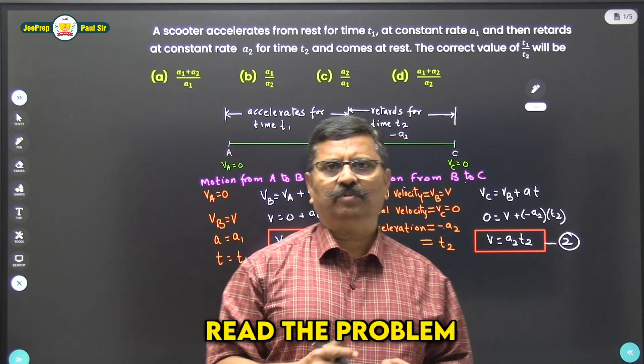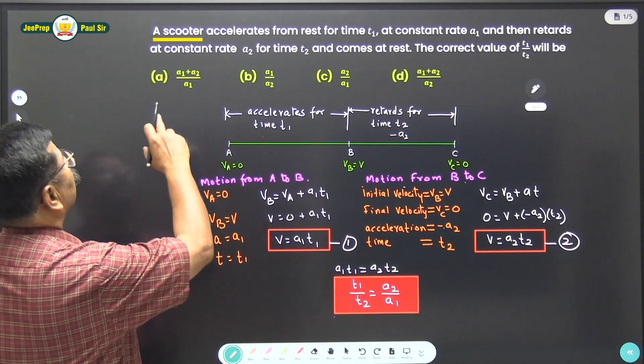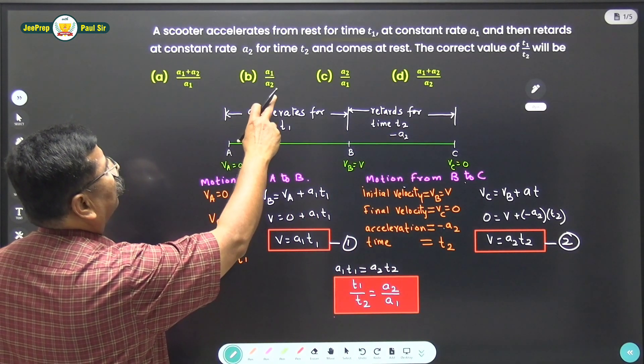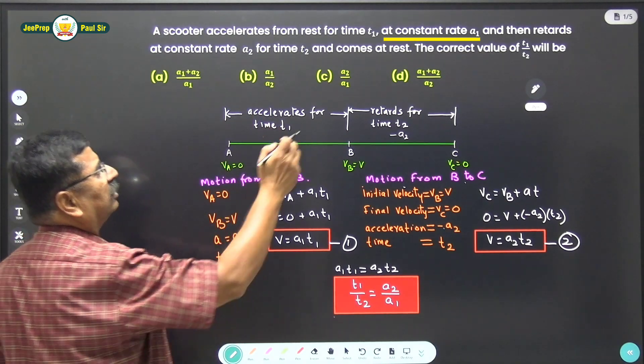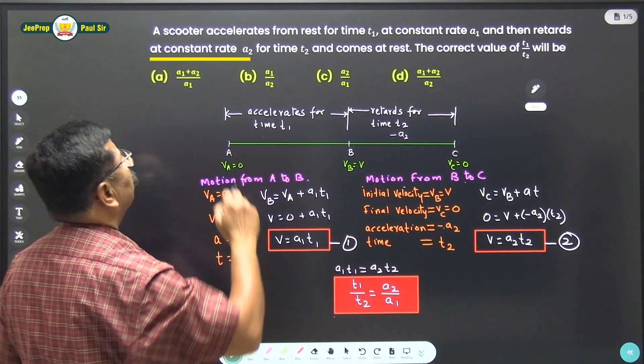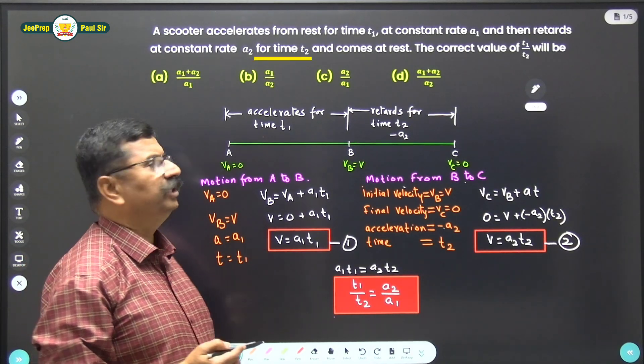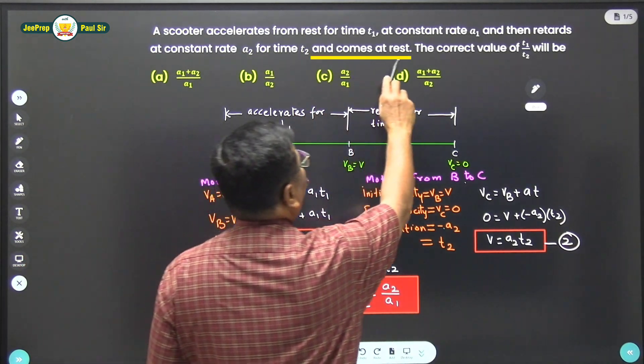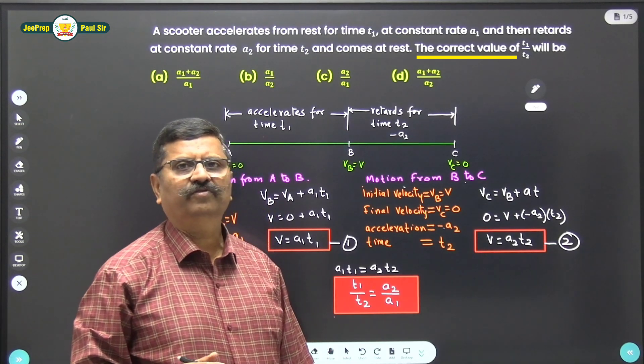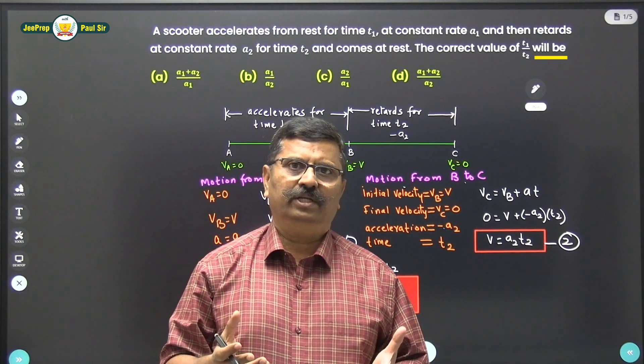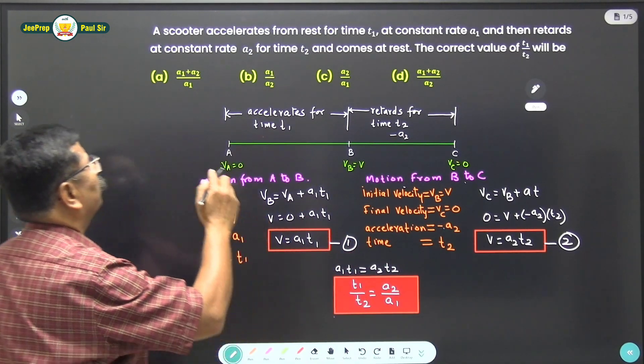Now let us read the problem. A scooter accelerates from rest for time t1 at constant a1, and then retards at constant a2 for time t2 and comes to rest. The correct value of t1 by t2 will be. They have given us these four options.